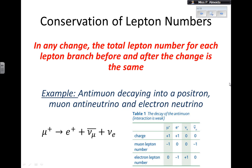I have an antimuon decaying into a positron, a muon antineutrino, and an electron neutrino. Let's look at this decay and see if these things are being conserved. For charge: the antimuon is plus 1, the positron is plus 1, the electron neutrino is 0, and the muon antineutrino is 0. So I have plus 1 in the beginning and plus 1 at the end. Charge is conserved, so this interaction can happen.